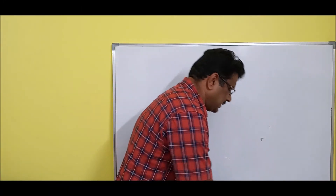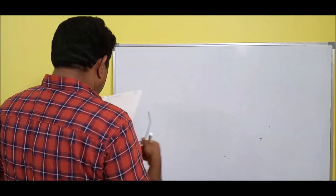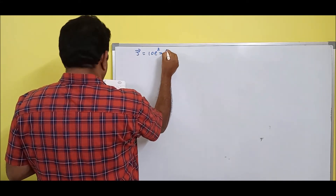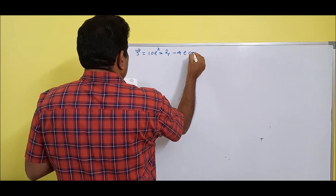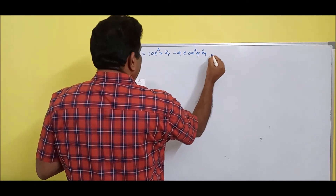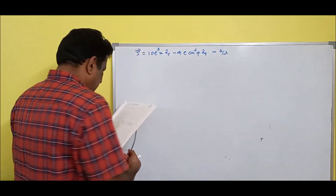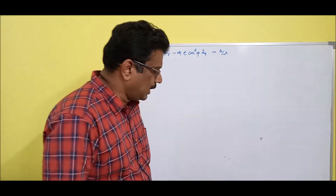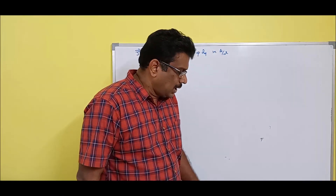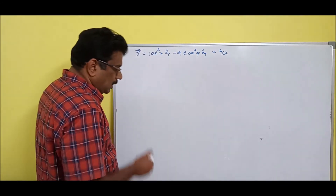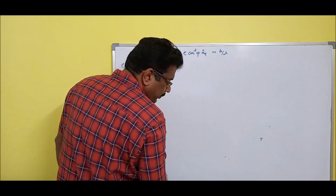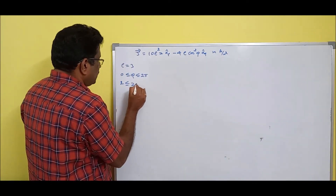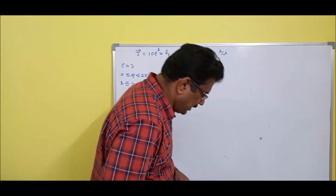Another problem. Given that current density J equals 10ρ²Z Aρ cap minus 4ρ cos²φ Aφ cap, in milliampere per meter square. Determine the total current flowing outward through the cylinder with ρ equal to 3, 0 ≤ φ ≤ 2π, and 2 ≤ Z ≤ 2.8.